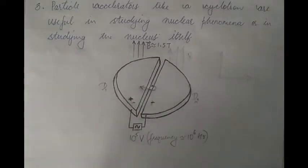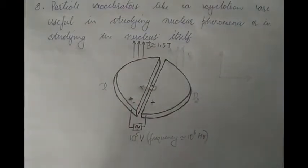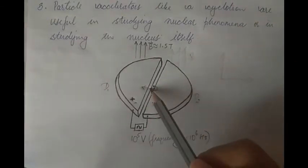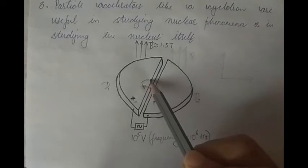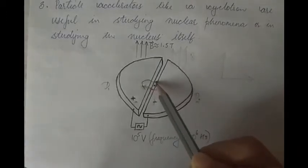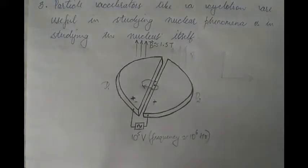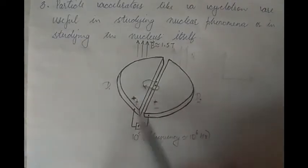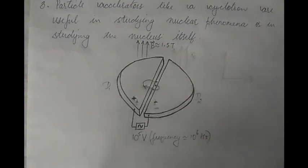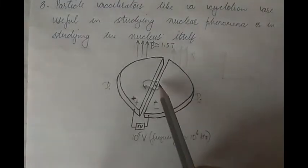Once it enters D1, it stops experiencing the electric force because inside D1 there is also no electric field. Whatever force it experiences inside D1 is solely due to the magnetic field. Again the charged particle enters the magnetic field with a certain velocity, moves in a circular path, but now with an increased radius due to the higher velocity, and again comes in between the two D's. The polarity of the alternating potential changes again — D1 becomes negative and D2 becomes positive — and the particle enters D2 again.